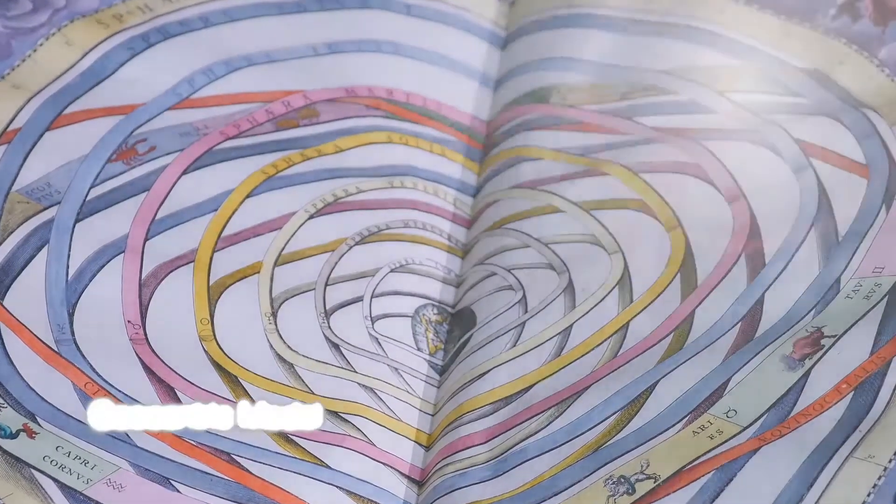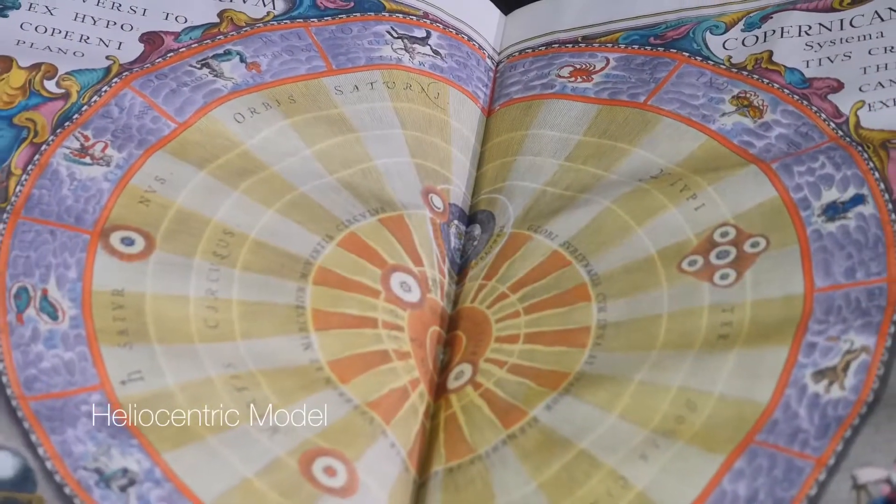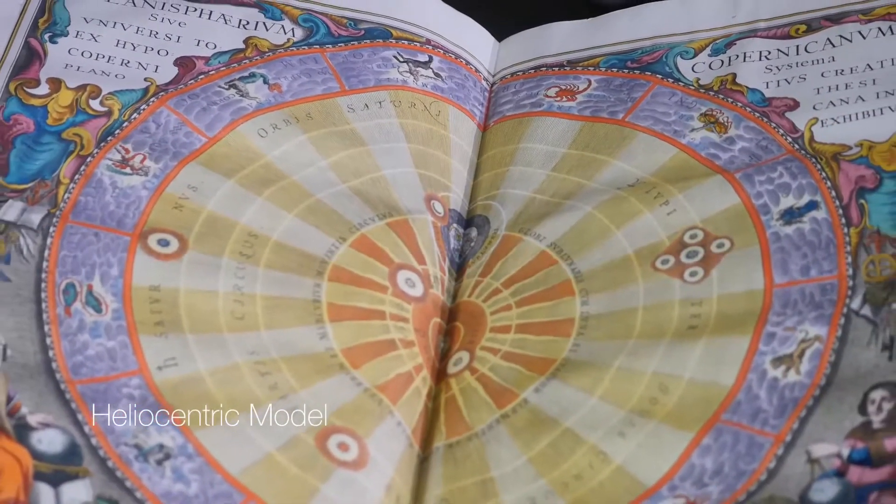Four centuries ago, however, the Earth lost its prized position when it was discovered that the Earth orbits the Sun and not the other way around.